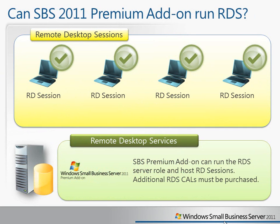The last topic to cover is using Remote Desktop Services to provide desktop virtualization. The Premium add-on can be used to run the Remote Desktop Services server role and host remote desktop sessions. Keep in mind that you do need RDS CALs for each remote desktop session. This is different from Essentials and Standard — both of those do not allow you to run the Remote Desktop Session Host, so you can only use the Premium add-on or other copies of Windows Server to provide remote desktop services.